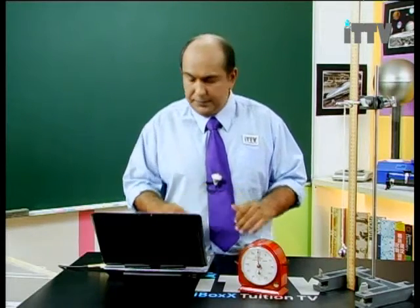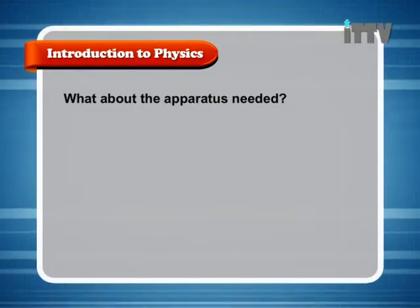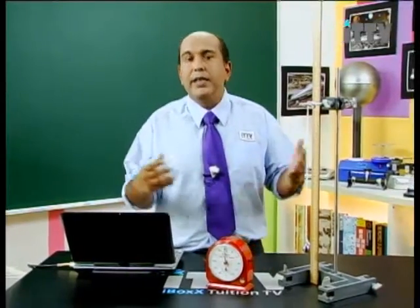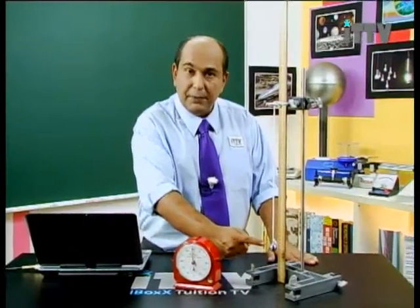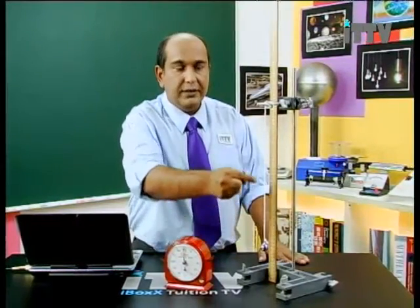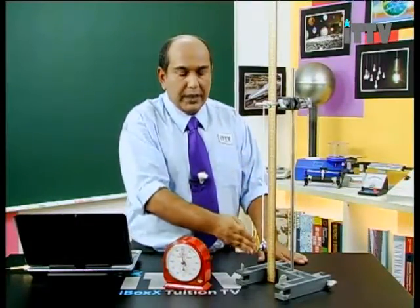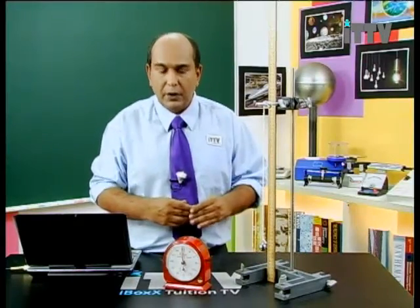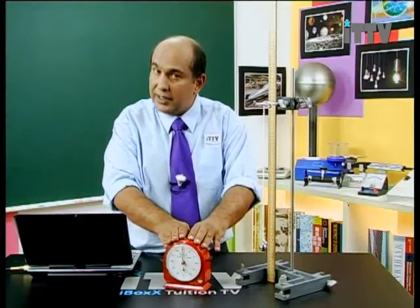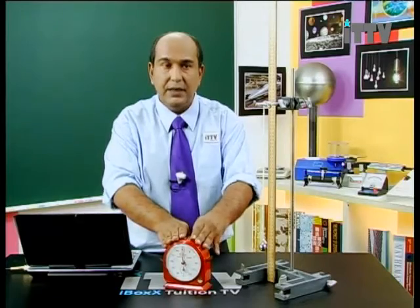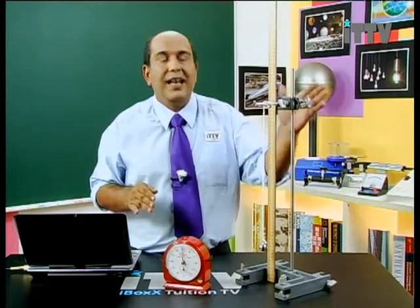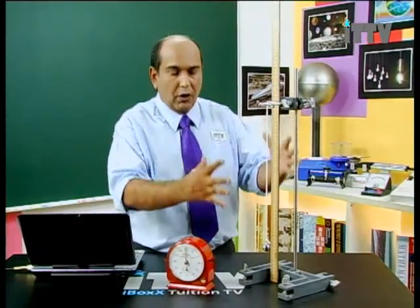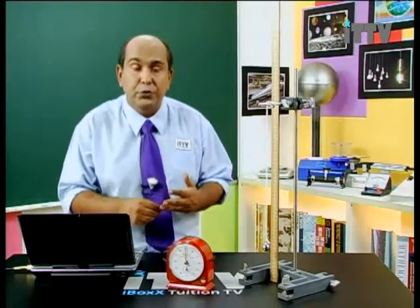Next, we need to gather all our apparatus. We need a pendulum bob, a string, a meter rule to measure the length of the pendulum, a stop clock to measure the time for oscillation, and a retort stand with a clamp attached to the top so we can hang our pendulum. We've got all our apparatus and we are almost ready to do the investigation.